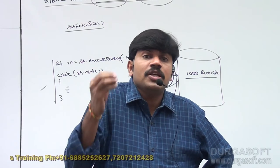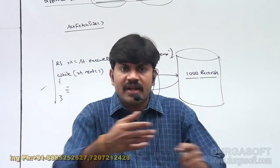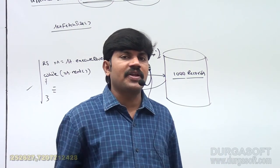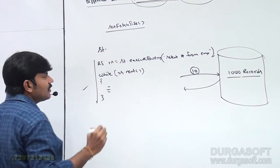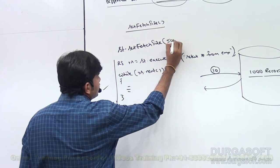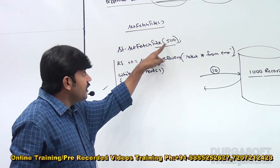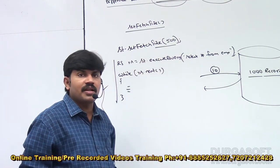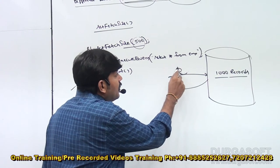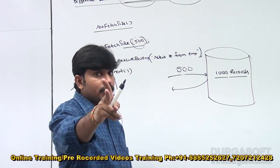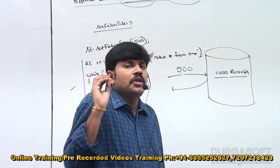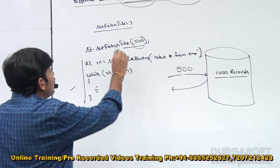Instead of fetching ten records at a time, we can say: bring five hundred records at a time. If you have such a requirement, call `st.setFetchSize(500)`. Then at a time five hundred records will come from the database. To retrieve one thousand records, only two database calls are needed, reducing network calls and automatically improving performance.